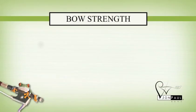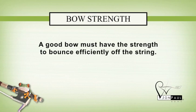A good camber for a bow is the one that maximizes that particular stick's strength to give the player their desired feel. Sounds subjective? You are right, it is. But a good general rule is, a good bow must have the strength to bounce efficiently off the string.